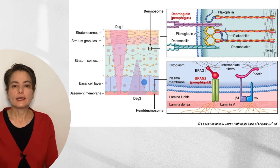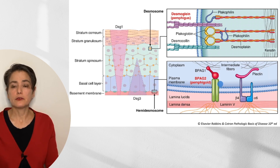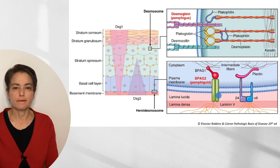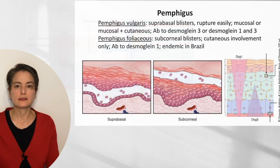When we talk about hemidesmosomes — which we'll discuss with bullous pemphigoid — we'll be looking at the BPAG2 protein, also known as collagen 17. Let's go on to pemphigus.